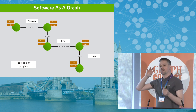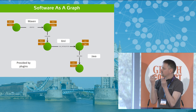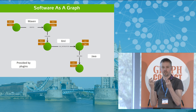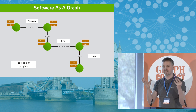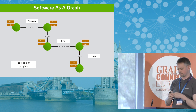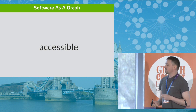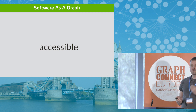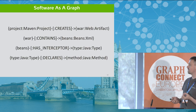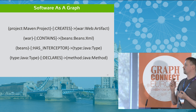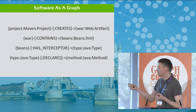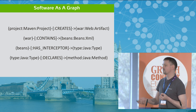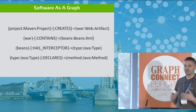This openness of the graph allows a plugin architecture for the tool. JQAssistant itself is just a framework for plugins adding other language concepts. It's accessible — not a closed data model. You're writing Cypher, a very expressive query language. A Maven project creates a web artifact; the WAR contains a beans.xml which has an interceptor of a specific Java type, and the Java type declares a method. We can write it, we can read it.